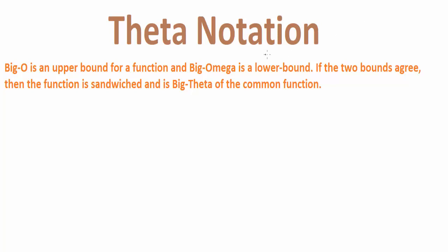Today we will be learning about theta notation. It is denoted like this, the symbol is like this. We already know that Big-O is the upper bound for a function and Big-Omega is the lower bound for it. If the two bounds agree, then the function is sandwiched and this is Big-Theta of the common function.